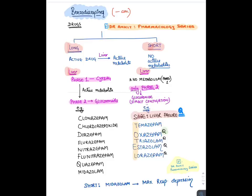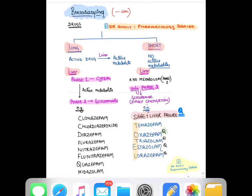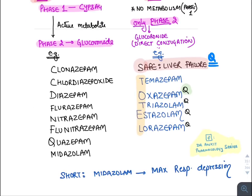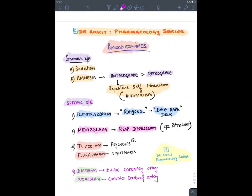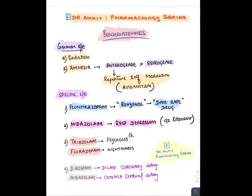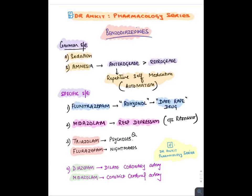The overall shortest-acting benzodiazepine is midazolam, because its phase 1 metabolism is very fast. Midazolam causes maximum respiratory depression and produces sudden effects. Common side effects of benzodiazepines include sedation and anterograde amnesia — future events are unremembered — and sometimes retrograde amnesia. This can lead to repetitive self-medication, known as automatism.